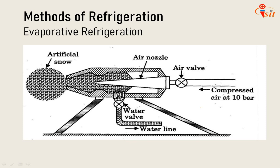Evaporative refrigeration is one of the most important methods, where heat is absorbed when liquid evaporates. Evaporation of moisture from the skin surface helps keep a person cool. Another common example is the desert bag used to keep drinking water cool — a bag of tightly woven fabric filled with water. The bag is not waterproof, so the surface stays moist. Under hot and dry desert conditions, moisture on the surface evaporates rapidly, removing heat from the water inside and keeping it several degrees below surrounding temperature.